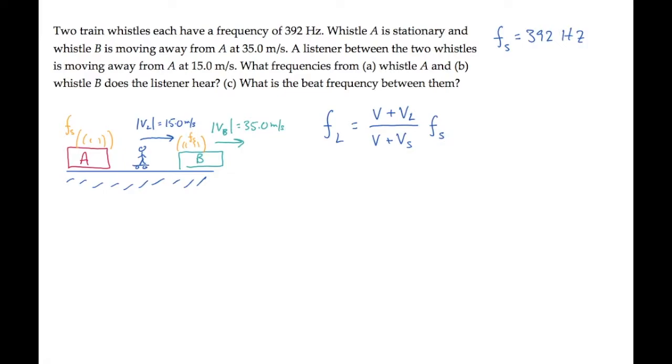We have to pay careful attention to signs here. The sign convention is that the positive direction for those velocities is the direction from the listener to the source. So for train A, the positive direction is to the left. And for train B, the positive direction is to the right.